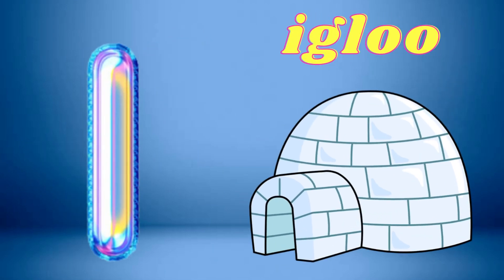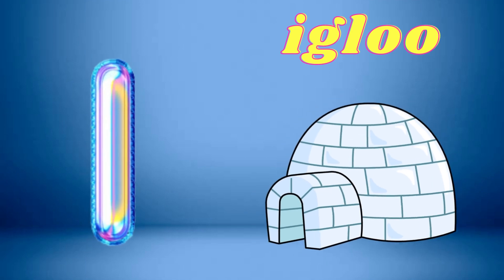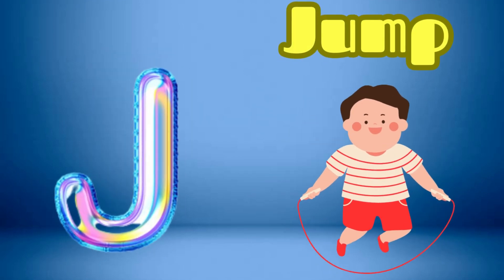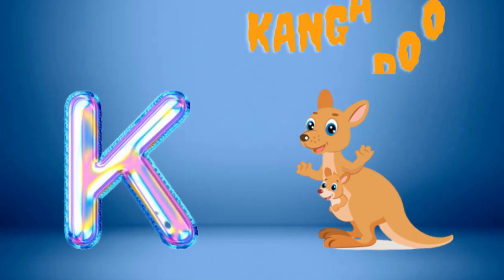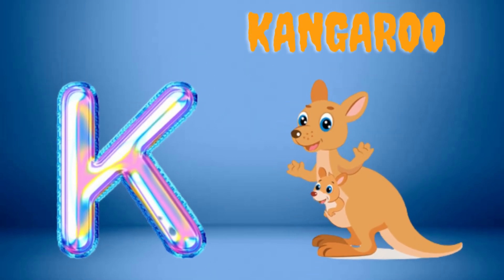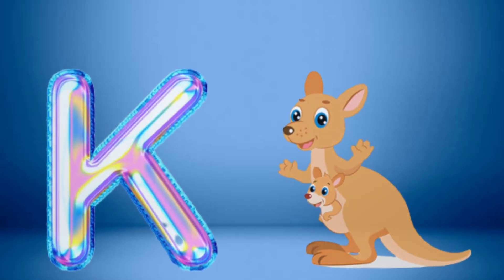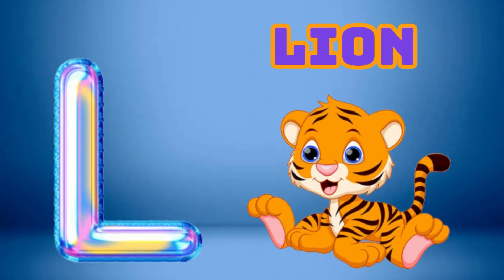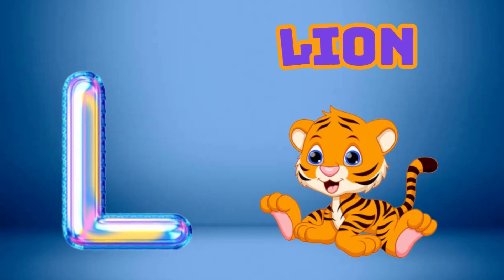I is for Igloo, I-I-Igloo. J is for Jump, J-J-Jump. K is for Kangaroo, K-K-Kangaroo. L is for Lion, L-L-Lion.